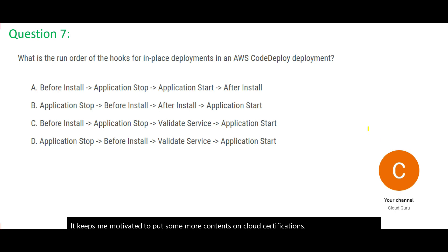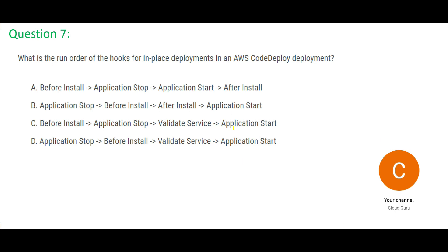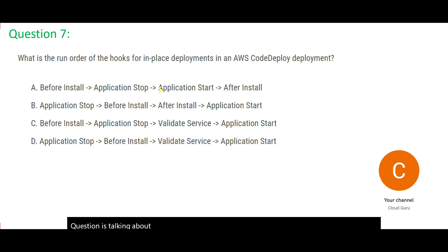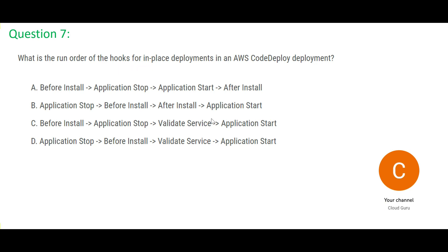Let's start with question 7. This question is talking about hooks. First we have to understand why we use hooks. Hooks are used because suppose you are deploying your EC2 instance and you are using AWS CloudFormation and you want to control what happens after the EC2 instance has been created.